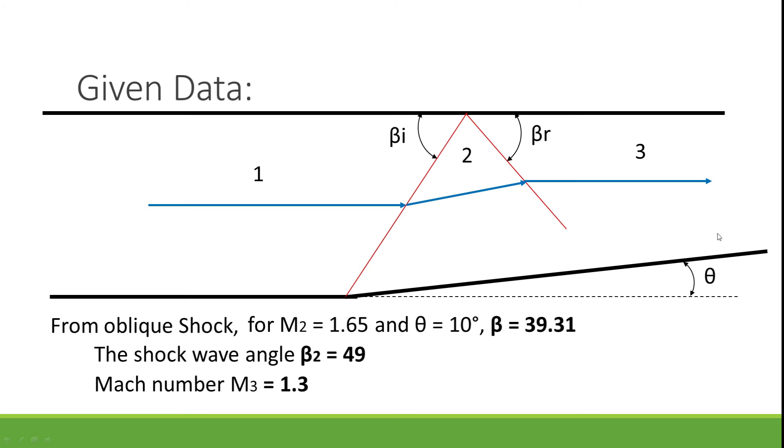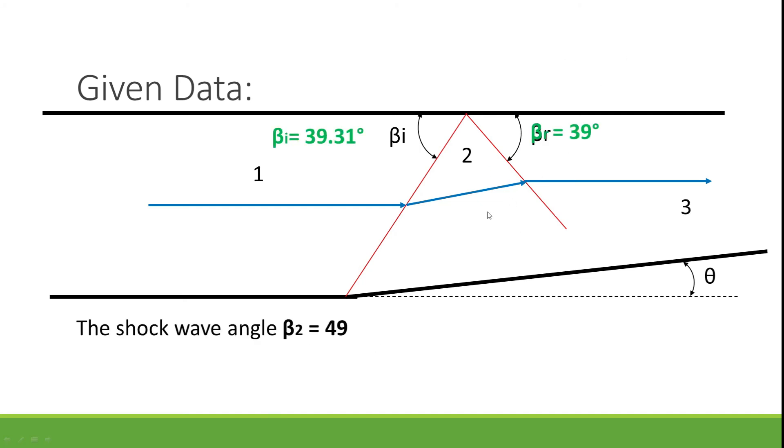Now here, the flow which we are considering is going to be parallel to region 2. Now we have to find with respect to this flat wall or solid wall, not from the wedge. So what you have to do, as the wedge is inclined at 10 degrees, we just need to subtract it.